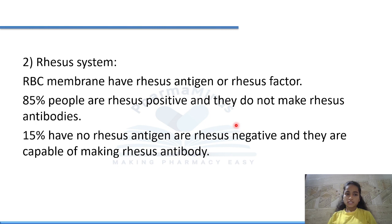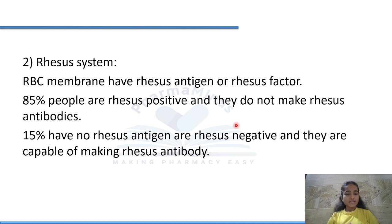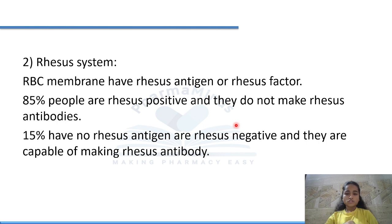In the Rhesus (Rh) system, RBC membranes have rhesus antigen. 85% of people are Rh-positive and do not make rhesus antibodies. The remaining 15% have no rhesus antigen — they are Rh-negative and are capable of making rhesus antibodies when exposed to Rh-positive blood.